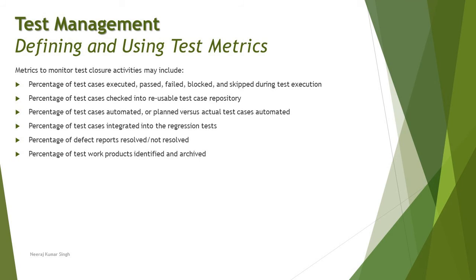Further test closure metrics include: percentage of test cases integrated into the regression test suite for future regression testing when updates occur; and percentage of defects reported resolved versus not resolved — since some defects may be deferred due to missing requirements, incomplete information, or other issues. You document the number of unresolved defects. Finally, percentage of test work products identified and archived for future reuse is also tracked.